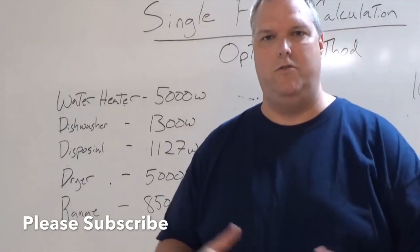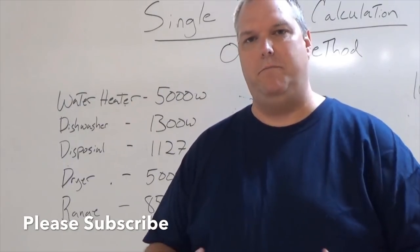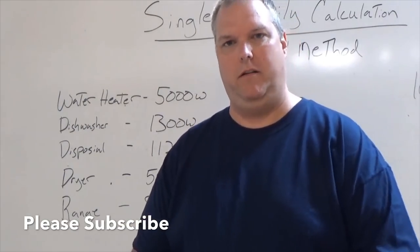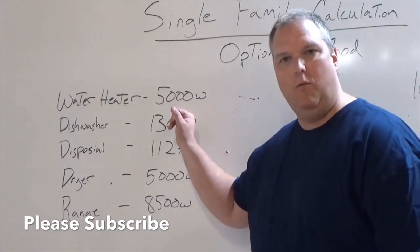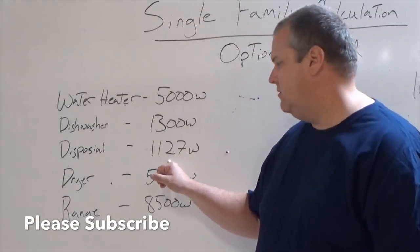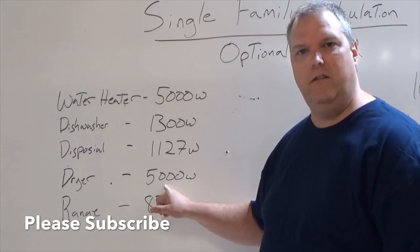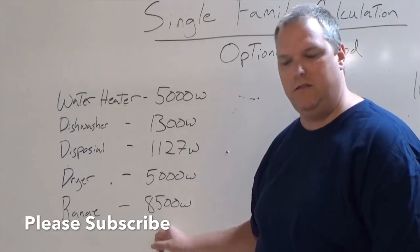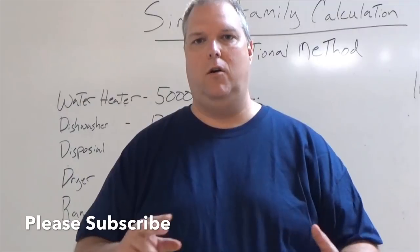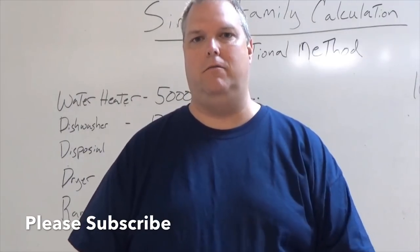Just like in the standard method, we go through everything that's going to be installed in the dwelling. We have a hot water heater at 5,000 watts, a dishwasher at 1,300 watts, a disposal at 1,127 watts, a dryer at 5,000 watts, and a range at 8,500 watts. Note that at this point we are not adding any heating, cooling, or largest motor — that's covered in another step.